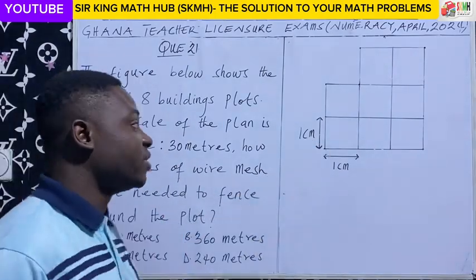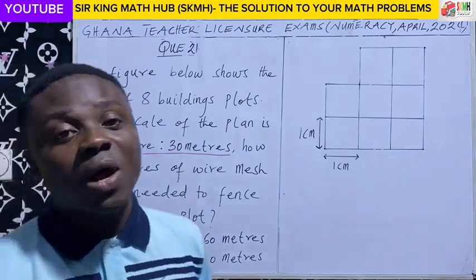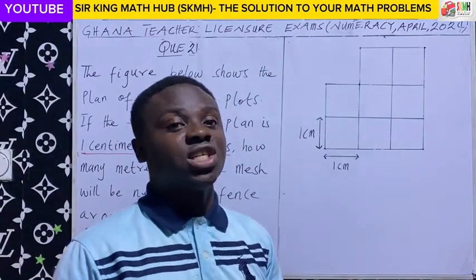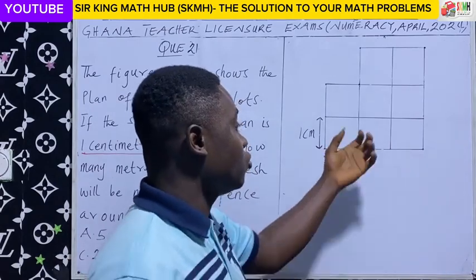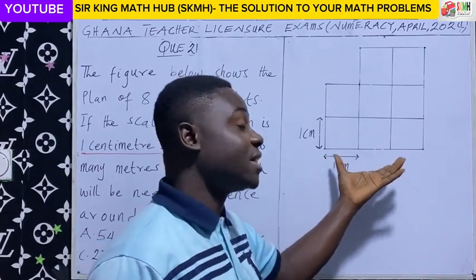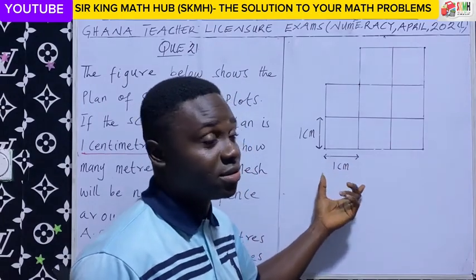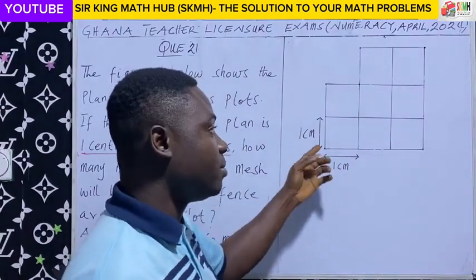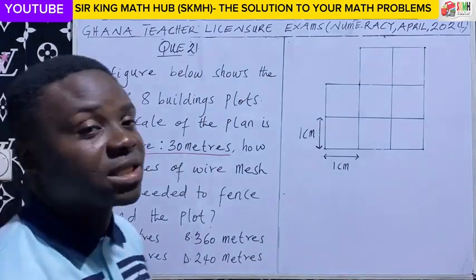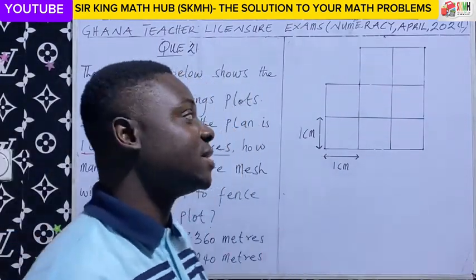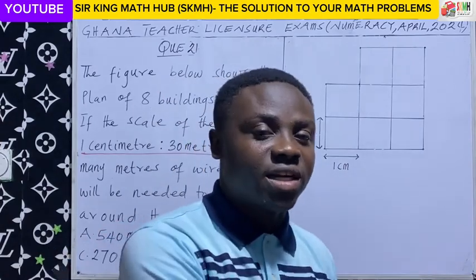The scale of this plan has been given as 1 cm to 30 m. A plan is a sketch, and the plot has been sketched on a piece of paper. The scale shows us the ratio or the relationship that exists between the distance on the plan and the distance on the ground. Each building plot here has a length of 1 cm on the plan.